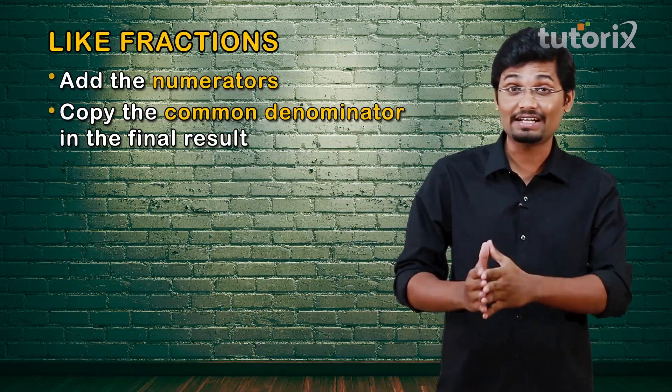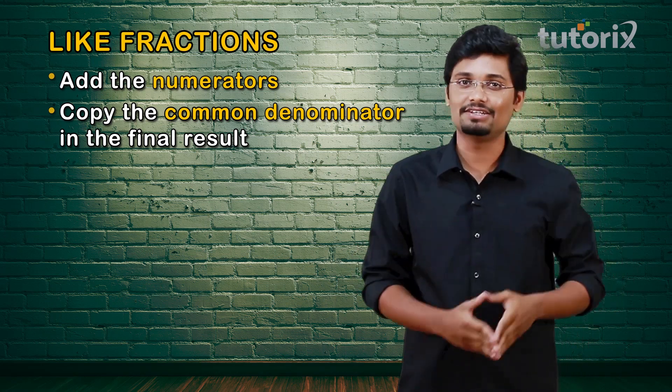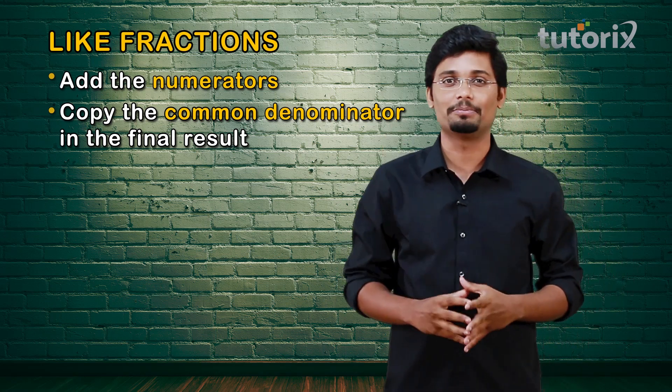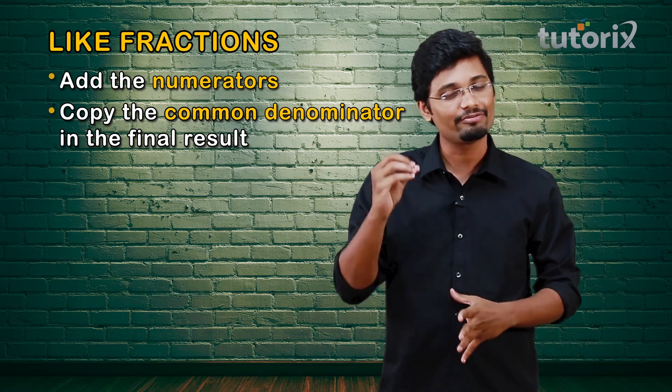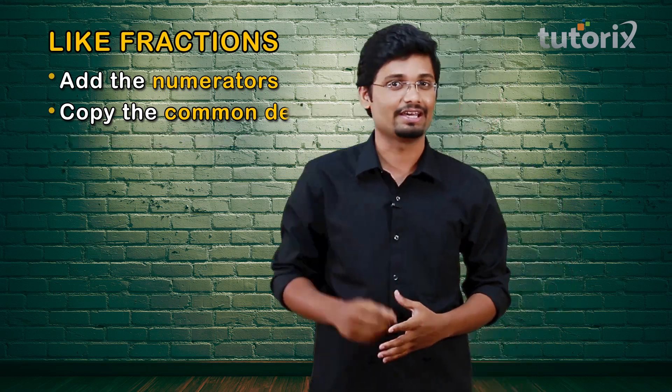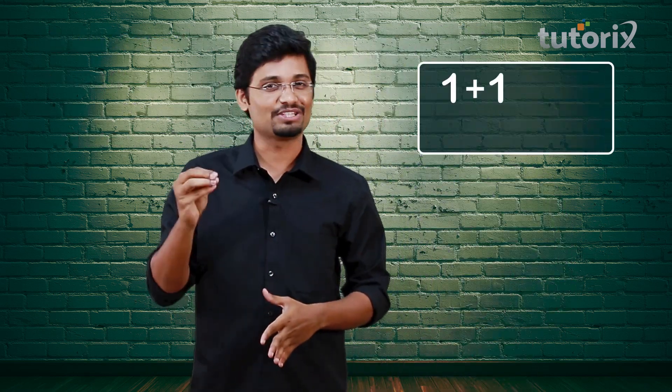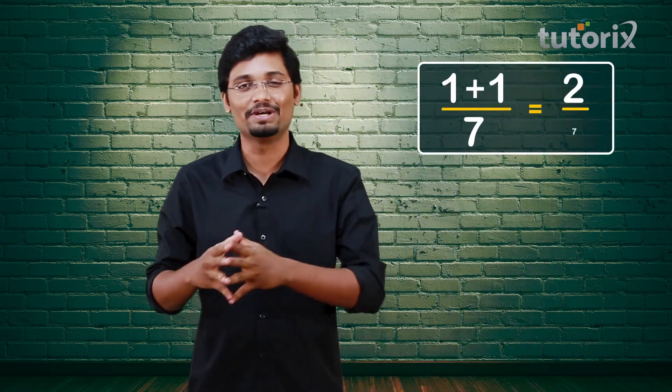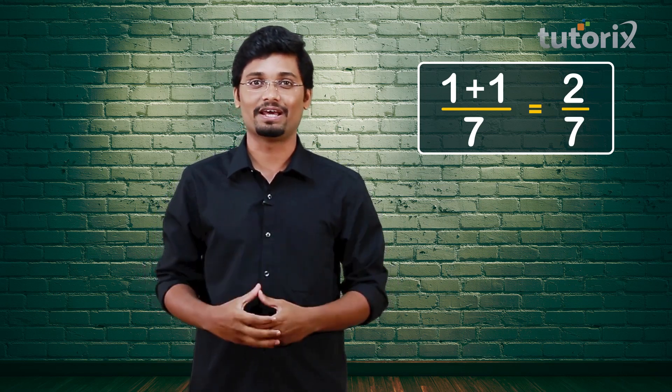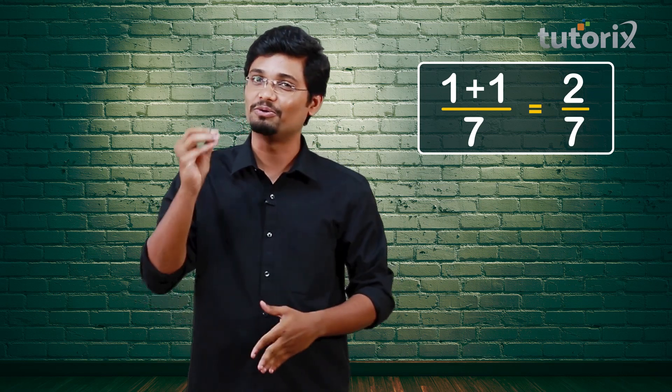Oh, don't worry — you almost solved the problem except you got confused with the denominators. Let me help you figure it out. First, let me tell you the method of adding like fractions. If the fractions are like, we directly add the numerators and simply copy the common denominator in the final result. So in your case, the addition is 1 plus 1 by 7, which is 2 by 7. This also implies that we have taken 2 balls out of 7.